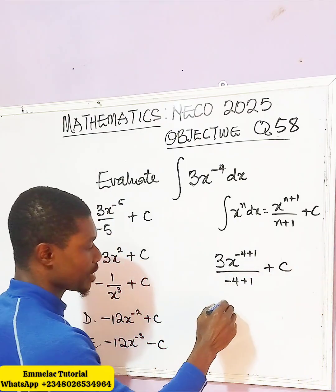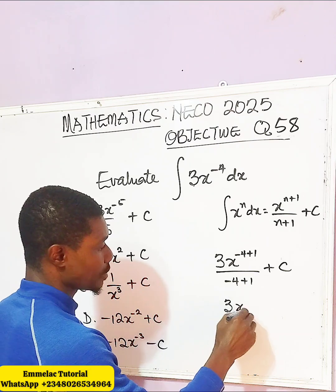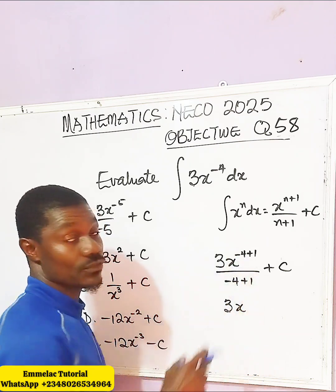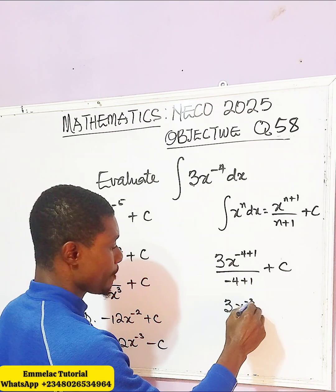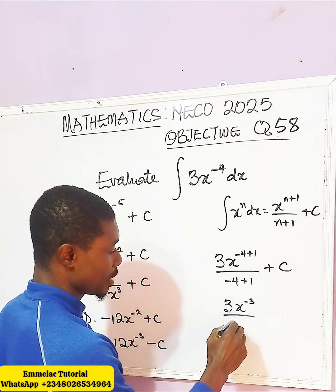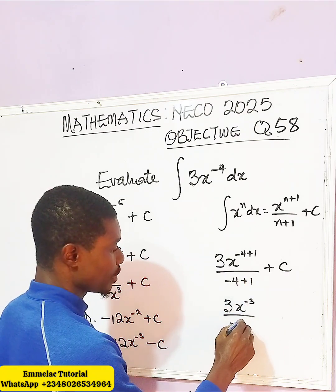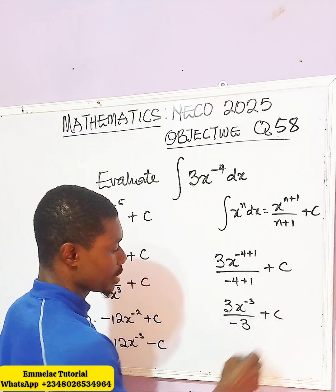So here we have 3x raised to the power of negative 4 plus 1, that will give us negative 3, all over negative 3, then plus C.